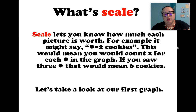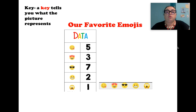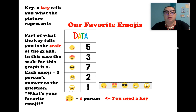Let's take a look at our first graph. Remember, you always need a title — the title of our graph is 'Our Favorite Emojis.' And remember, we need a key. A key tells you what the picture represents or means. So in our key, for every emoji face it's going to equal one person. Part of what the key tells you is the scale of the graph. In this case, the scale is one, and each emoji equals one person who answered the question: what's your favorite emoji?